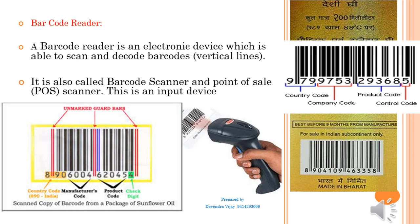Each barcode has 95 vertical lines in total, which are divided into two parts of 42 lines on each side. These 42 lines are also divided into six parts. In each part there are seven lines, and they generate numbers from one to six.